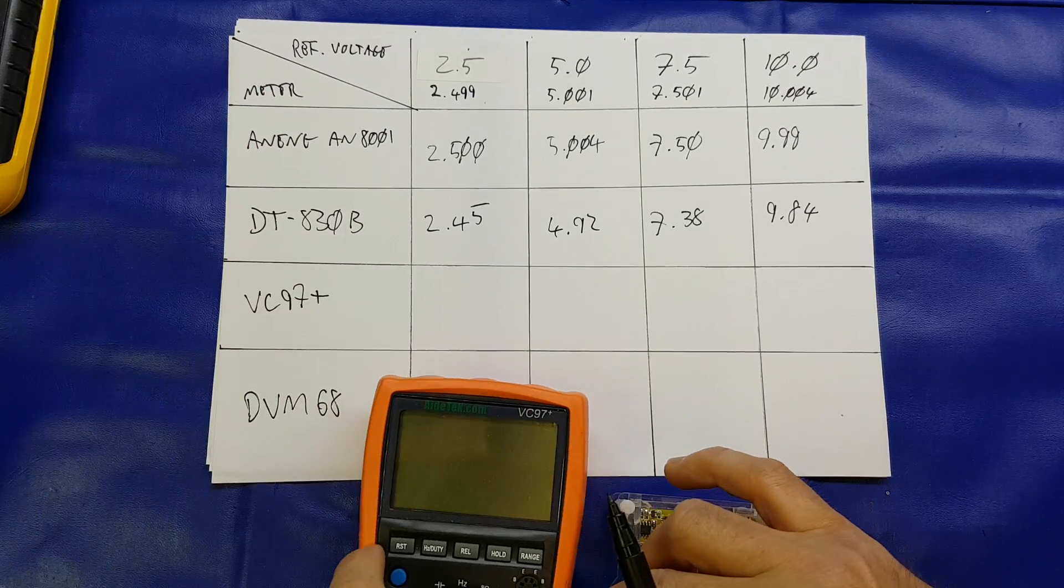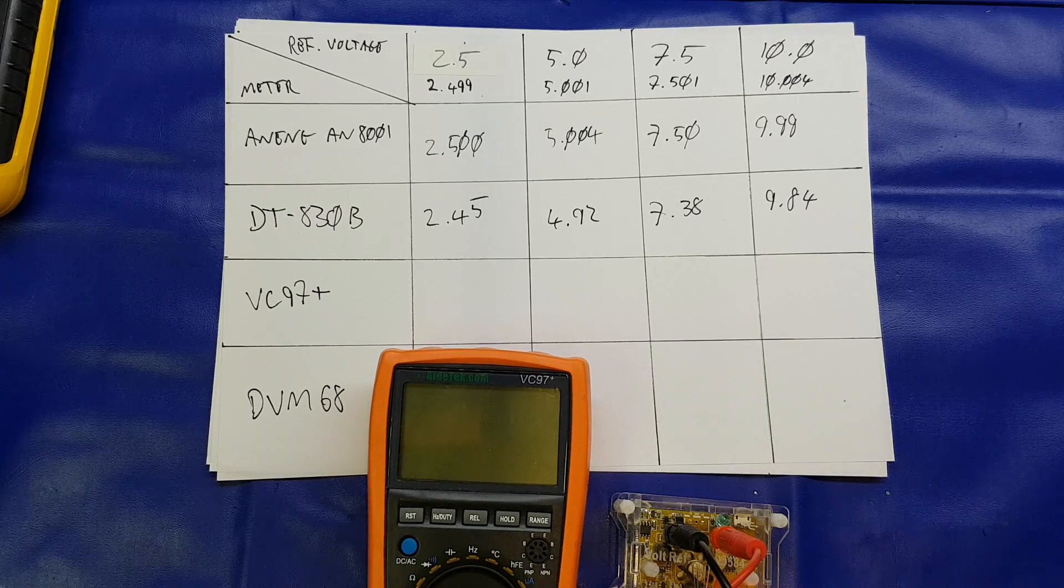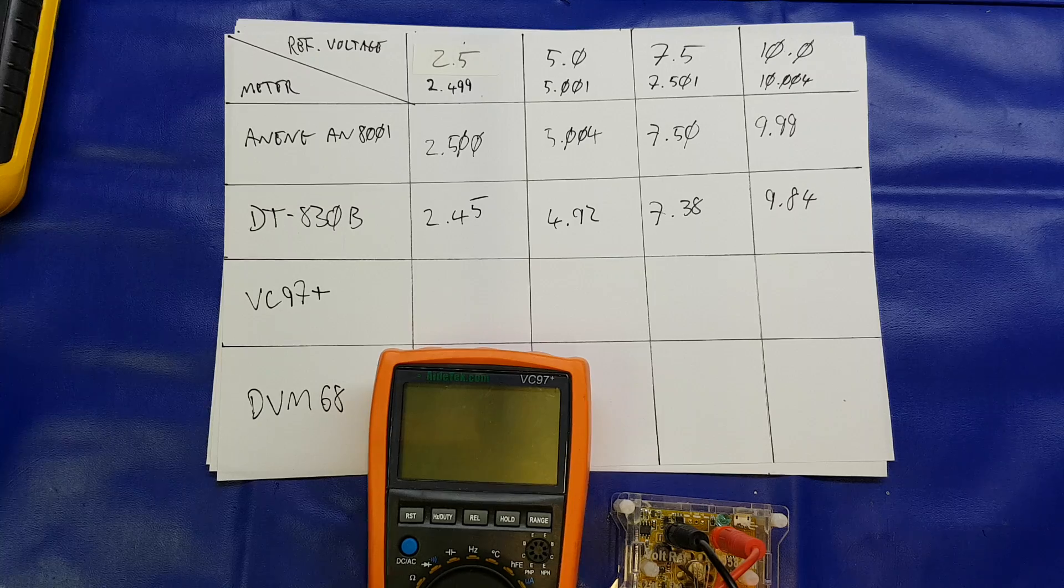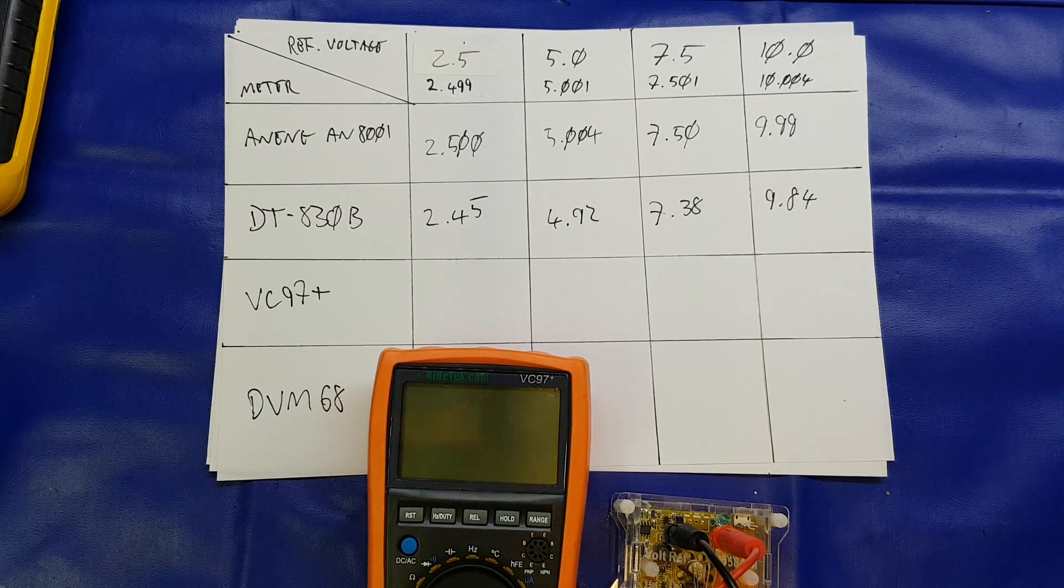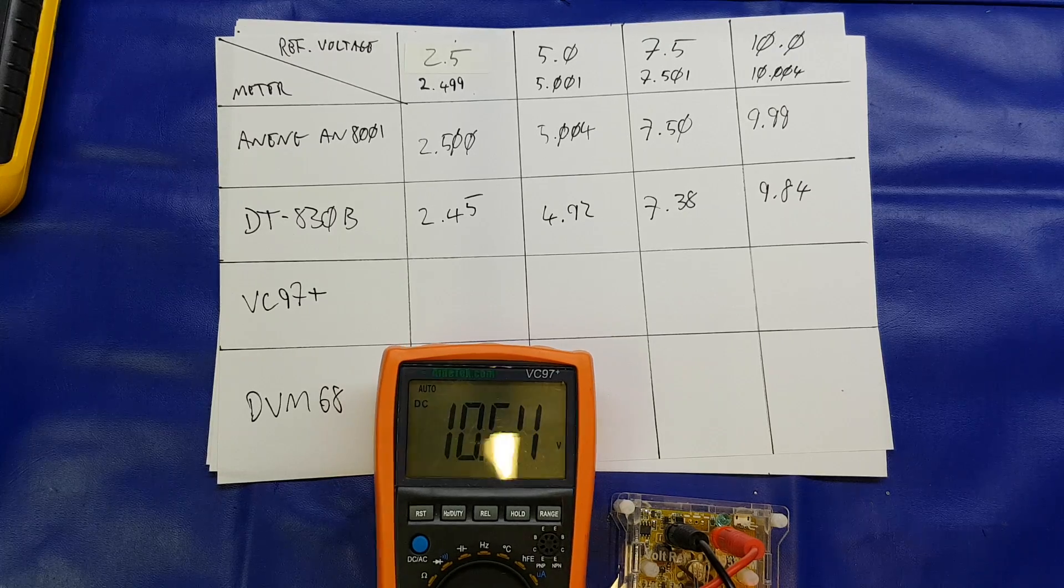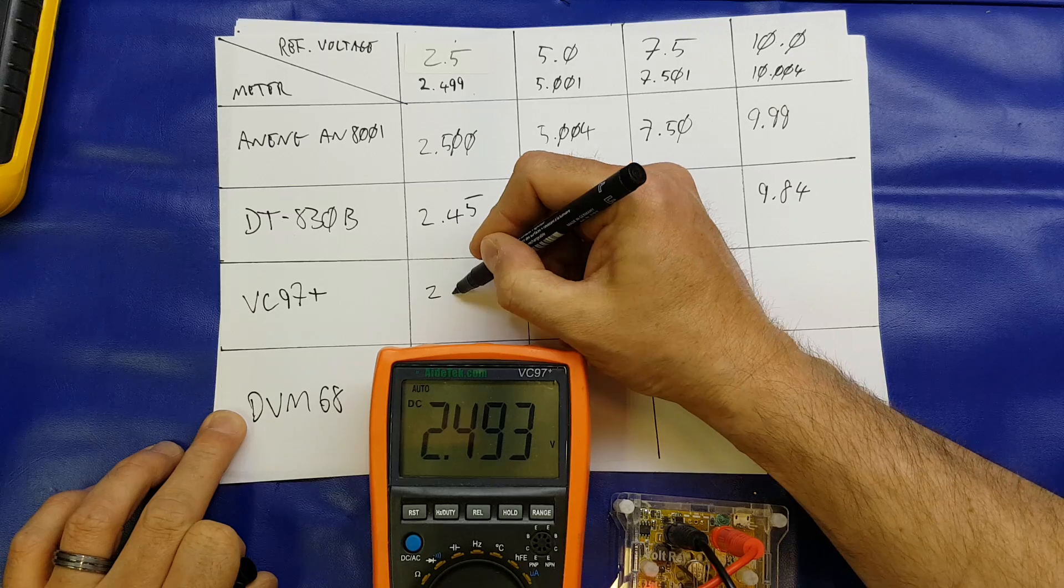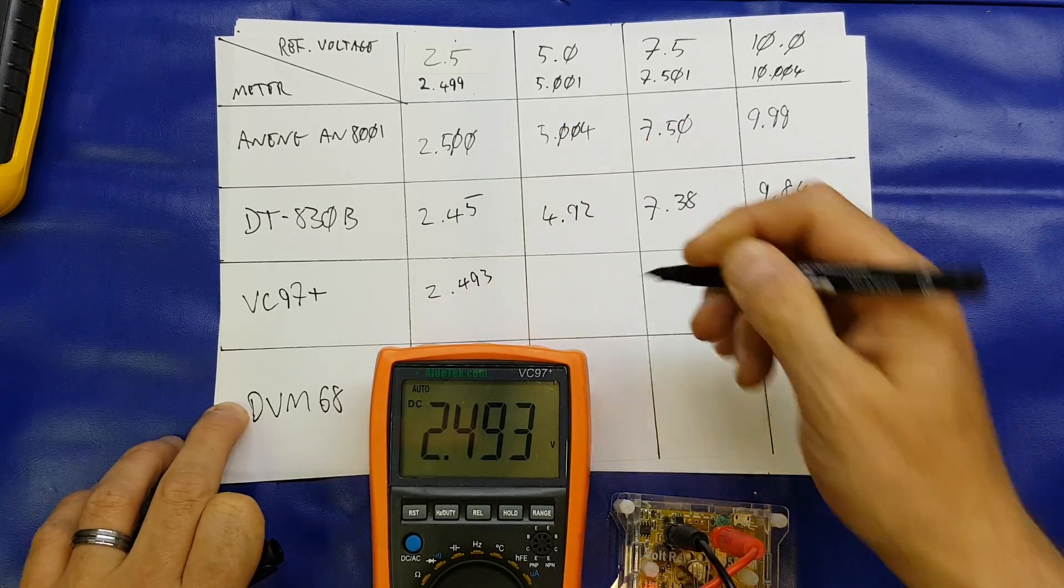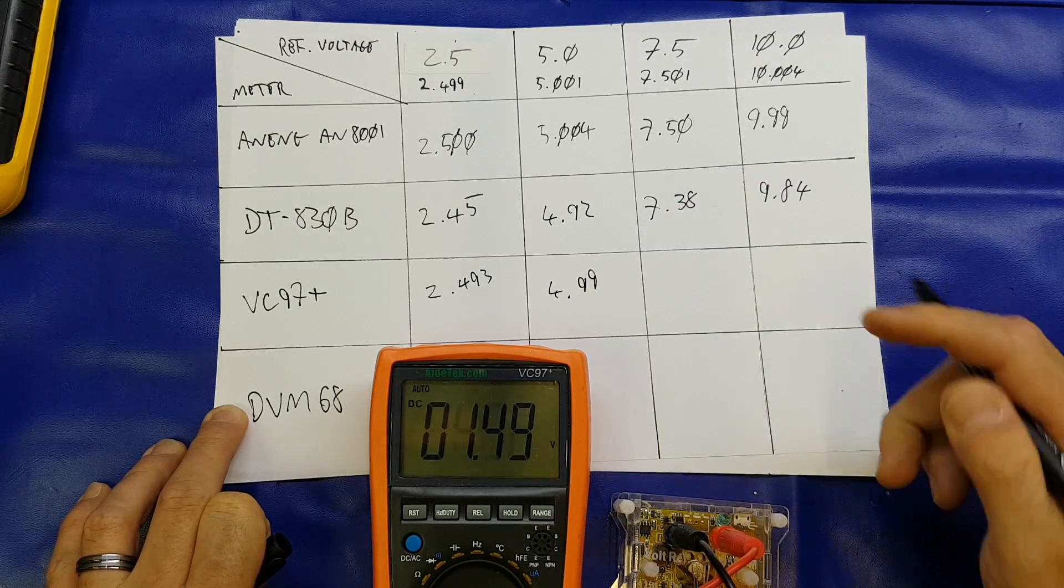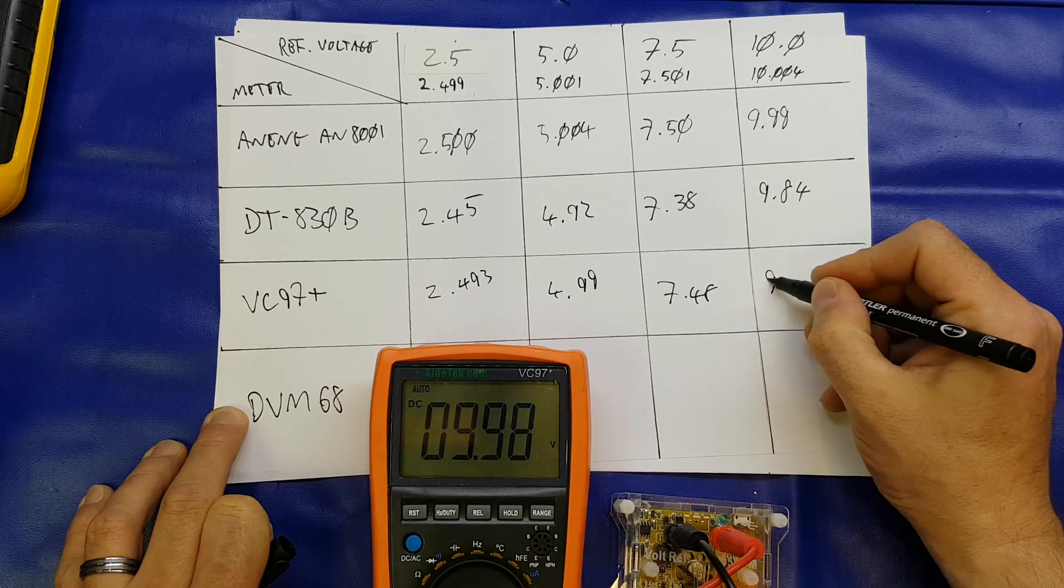On to the VC97 now, which is my, I'd say my second favourite after the Aneng. Having only had the Aneng a couple of weeks now, I have to say again, I am genuinely impressed with it. Turn it on. Plug it in. Go to the 2.5 volt range. 2.493. 4.99. 7.48. 9.98.